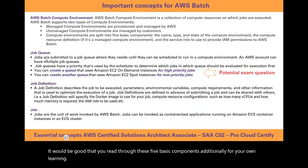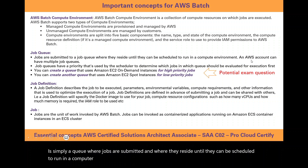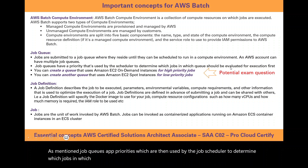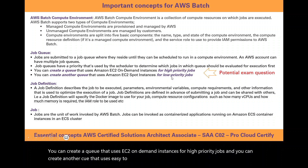A job queue is simply a queue where jobs are submitted and reside until they can be scheduled to run in a compute environment. An AWS account can have multiple job queues. Job queues have priorities which are used by the job scheduler to determine which jobs in which queue should be evaluated for execution. You can create a queue that uses EC2 on-demand instances for high priority jobs, and another queue that uses EC2 Spot instances for low priority jobs.